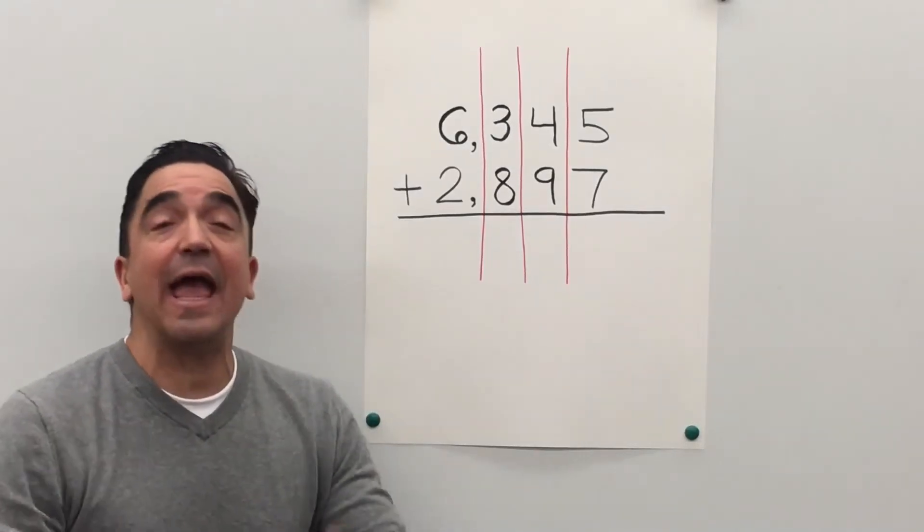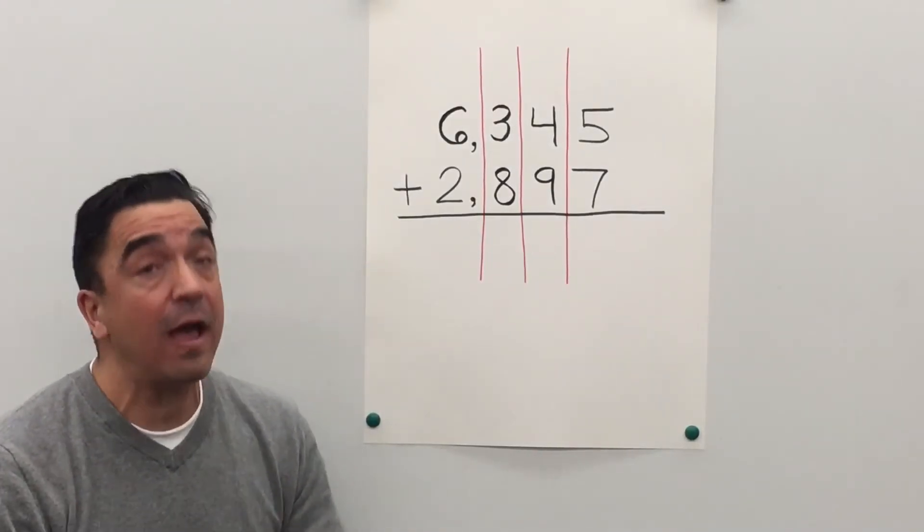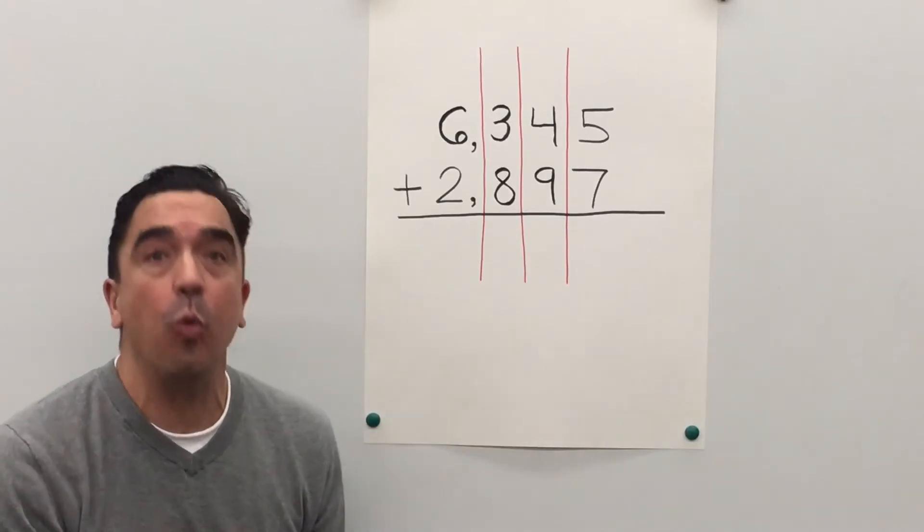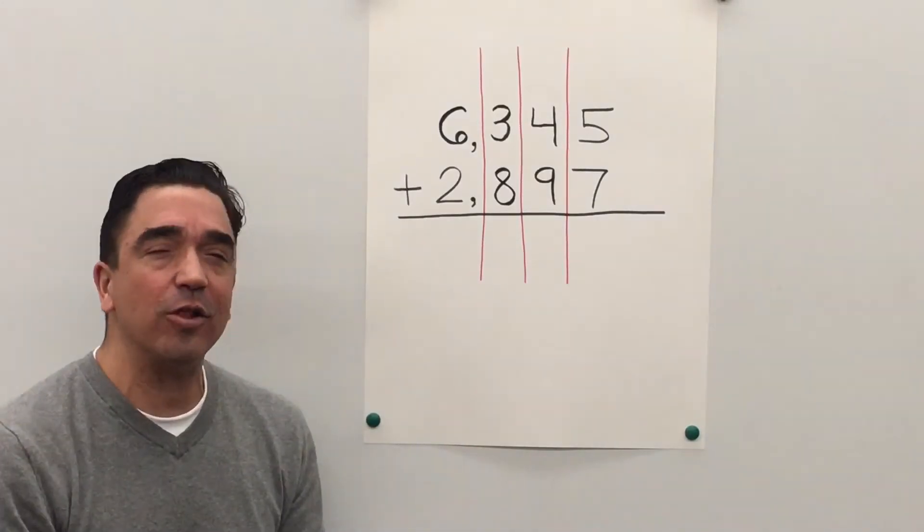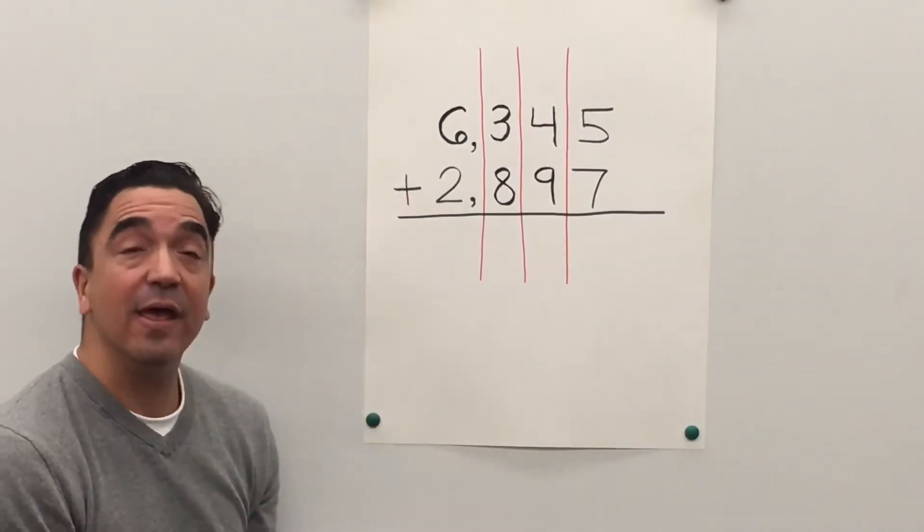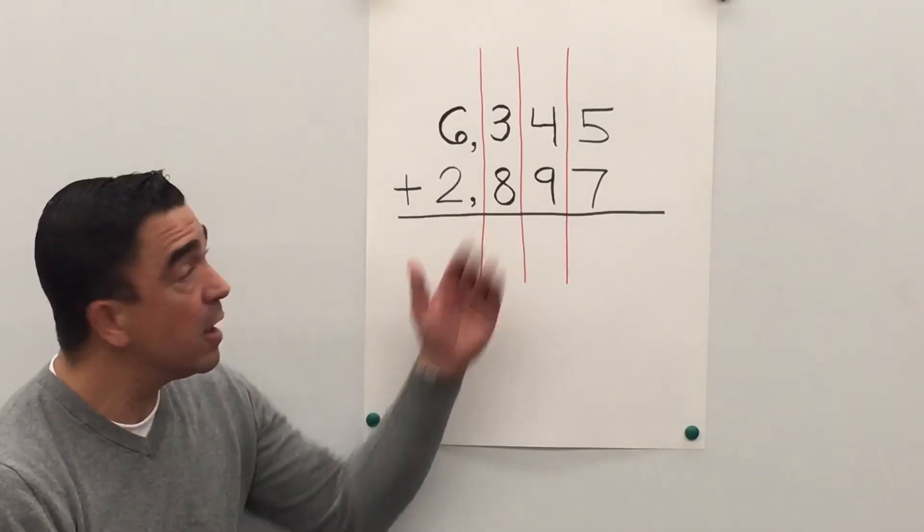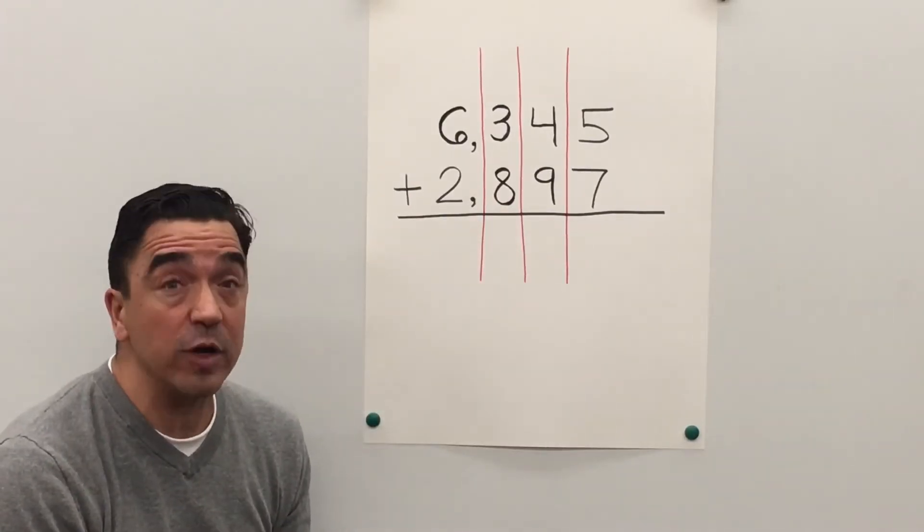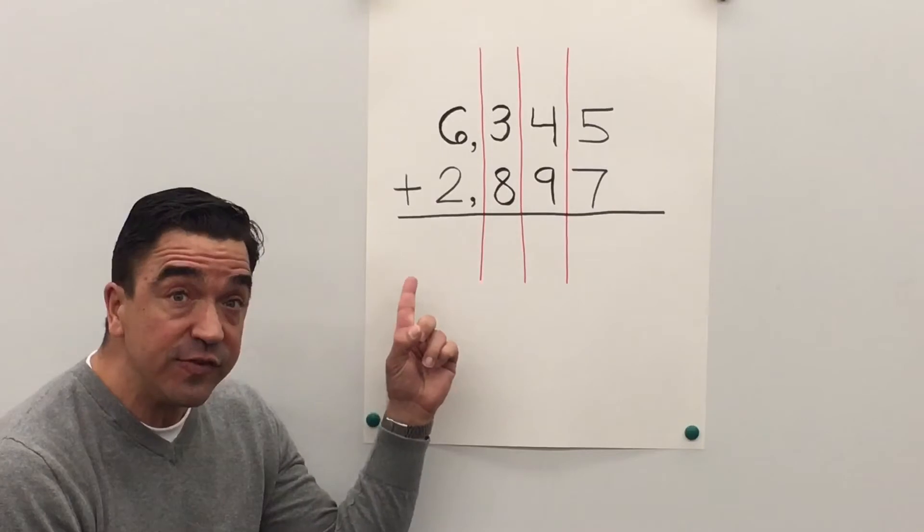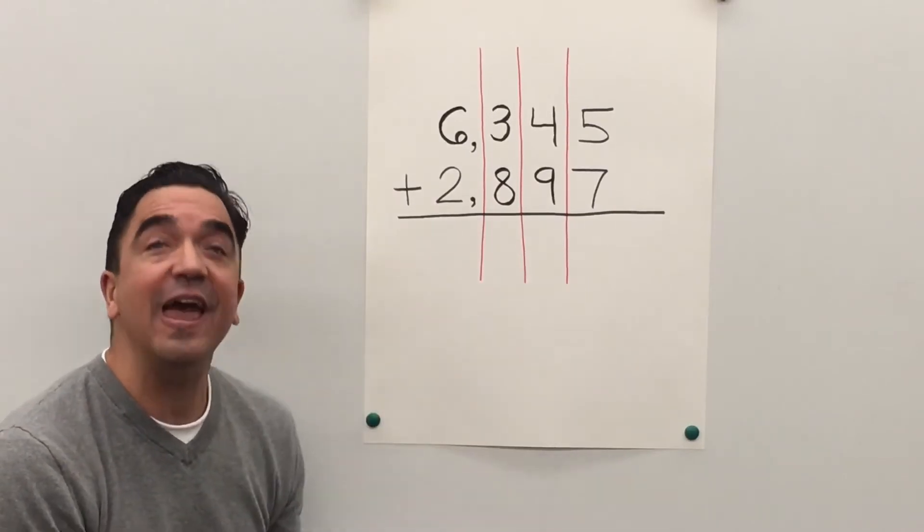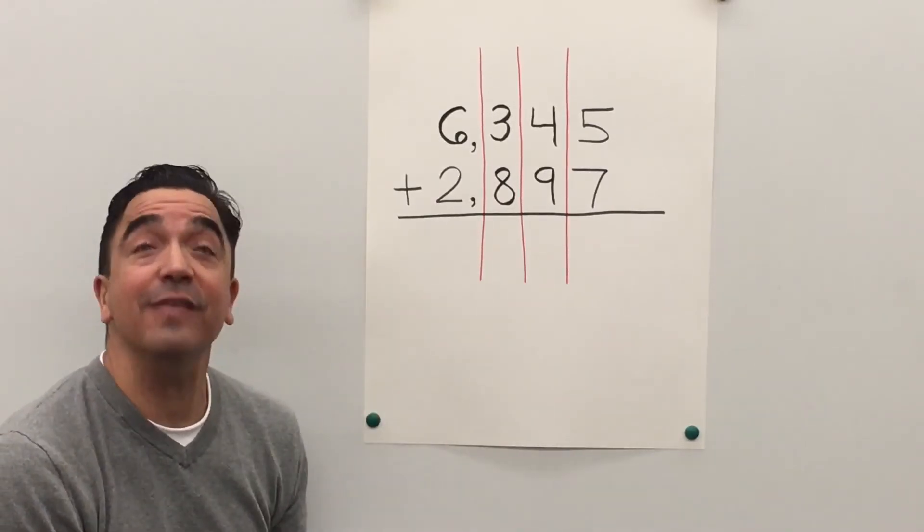Hi there, Coach Mike, and today we will be adding four-digit numbers with regrouping. Let's take a look at our problem: 6,345 plus 2,897.